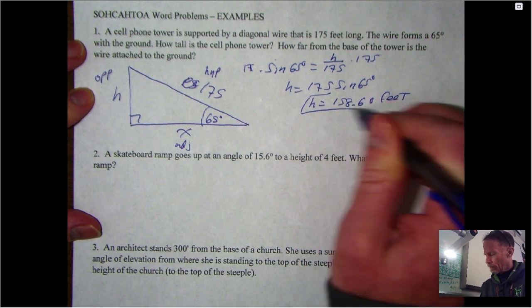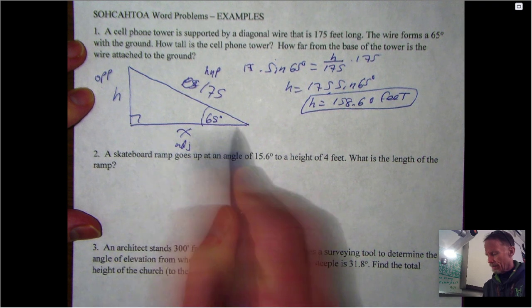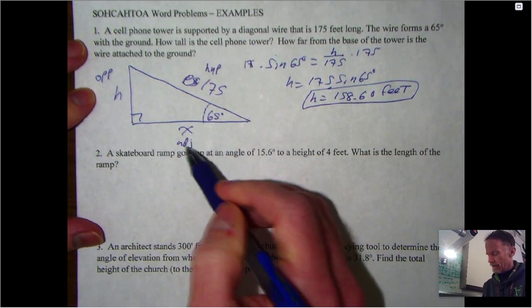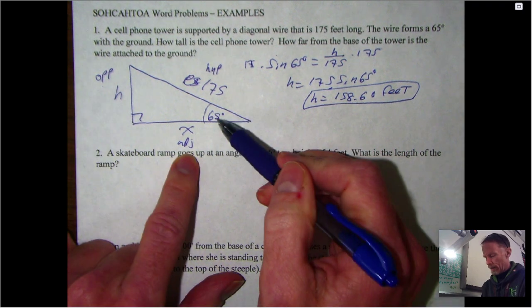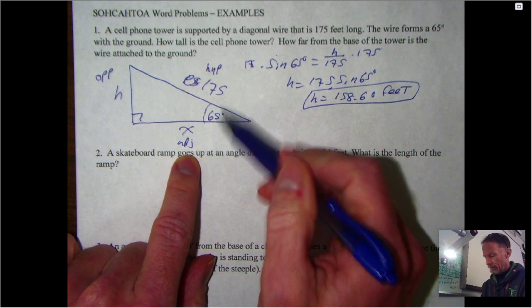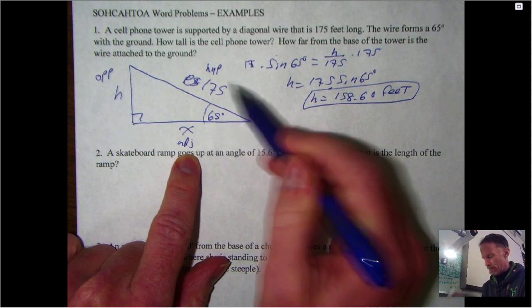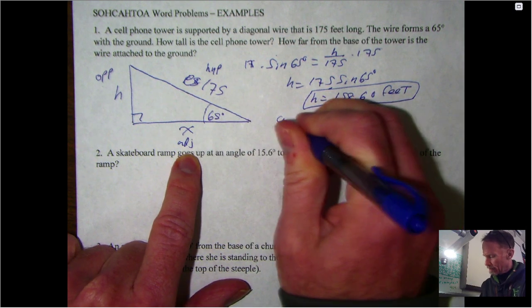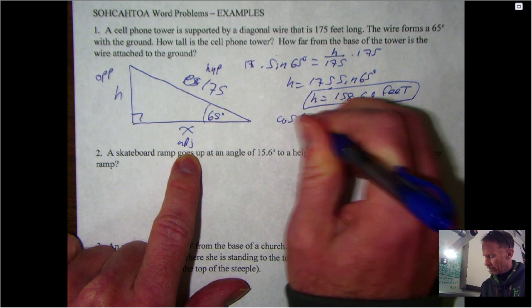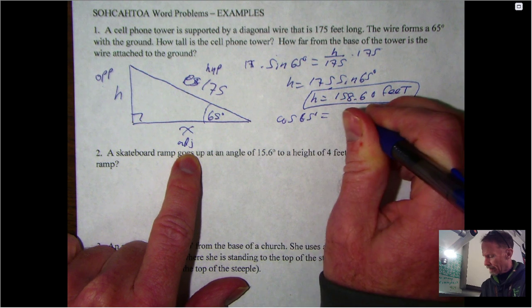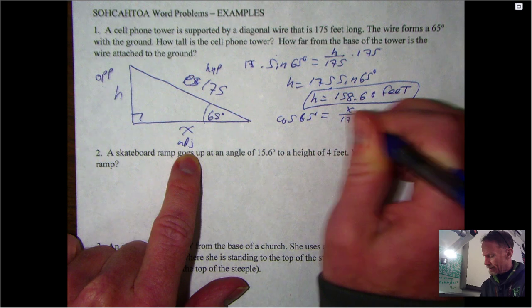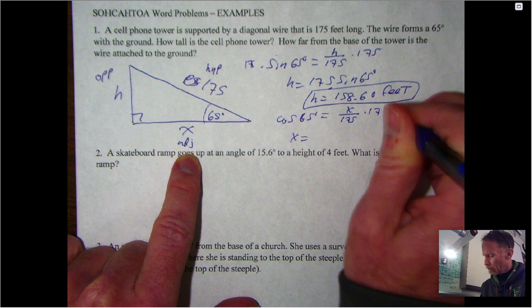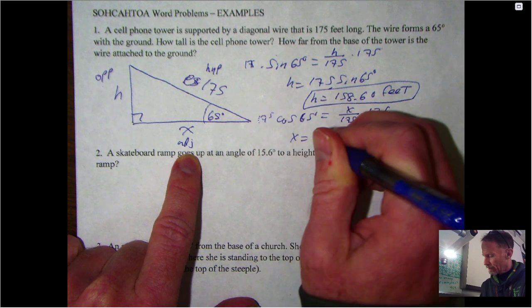And then for the length along the ground - and again this is clearly not drawn to scale, that's okay - the length along the ground we do the same thing. Now I've got the adjacent that I'm trying to find and I can still use the hypotenuse. So adjacent hypotenuse, that's cosine.